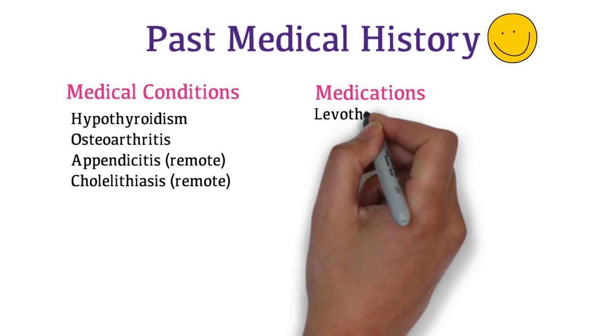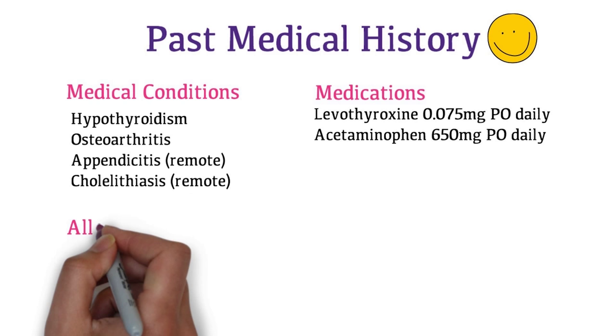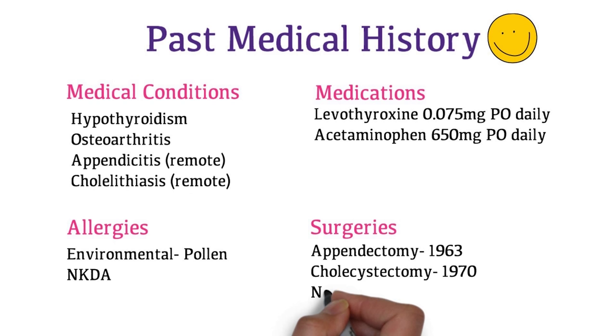She is taking levothyroxine, 0.075 mg daily for hypothyroidism, and acetaminophen, 650 mg daily for osteoarthritis. She is allergic to pollen but denies any allergies to medications. Her past surgical history includes appendectomy in 1963 and cholecystectomy in 1970.